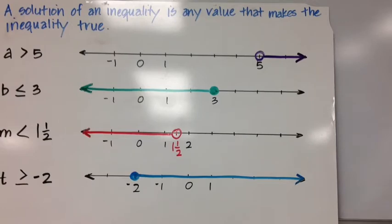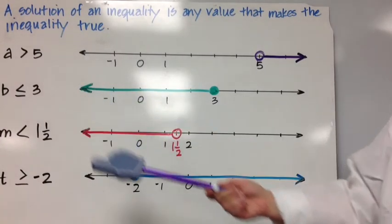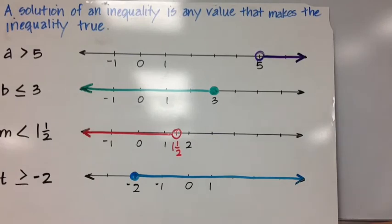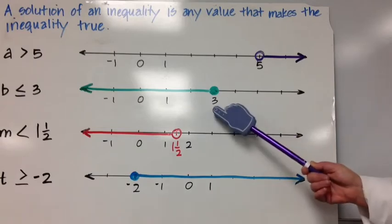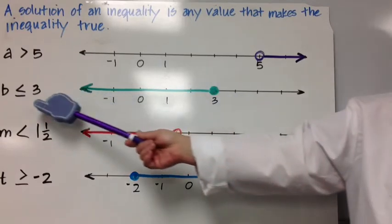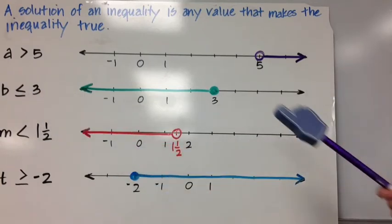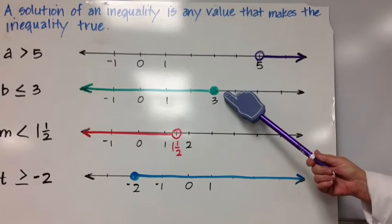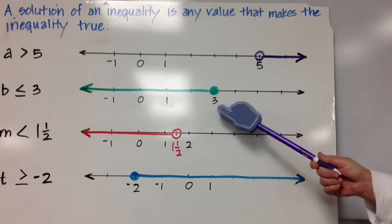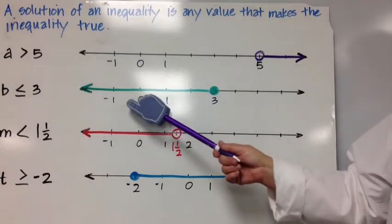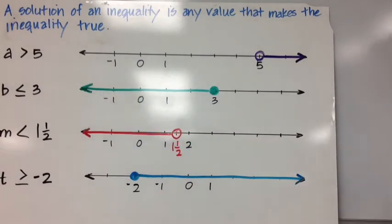B is less than or equal to 3. Is 3 part of the solution set? Yes — 3 is less than or equal to 3. But 4 is not less than or equal to 3, so we go the other direction. 0 is less than or equal to 3; negative 429.257 is less than or equal to 3. We start our graph at 3 with a solid circle, since 3 is part of the solution set, and the graph goes to the left.